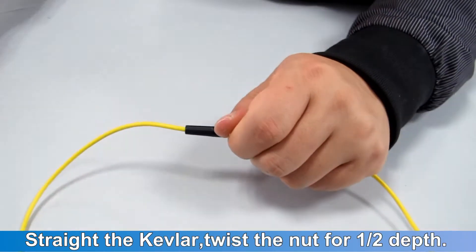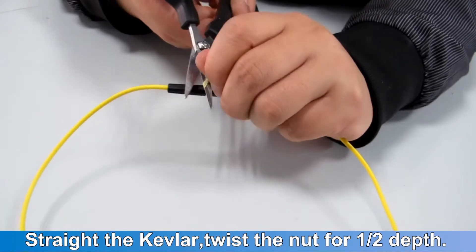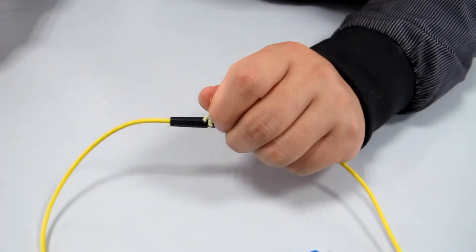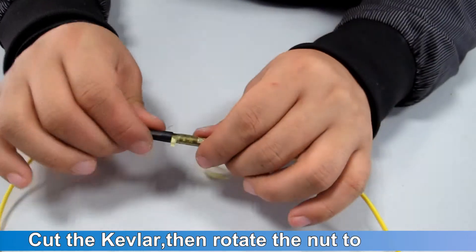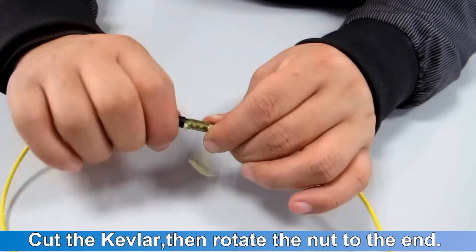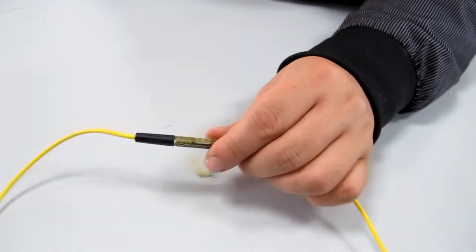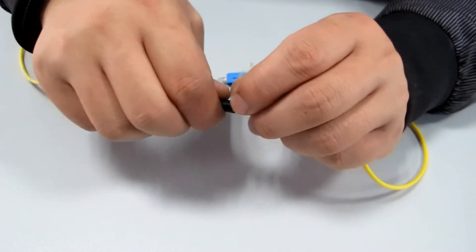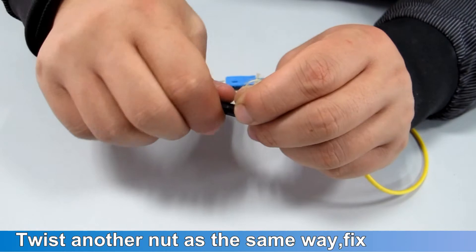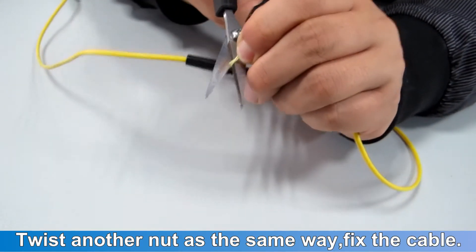Straighten the cable. Twist the nut for one to depth. Cut the cable, then rotate the nut to the end. Twist another nut the same way. Fix the cable.